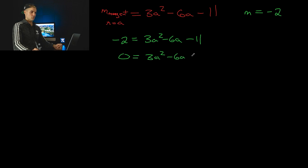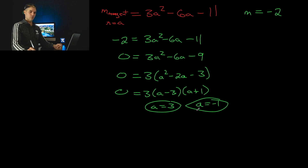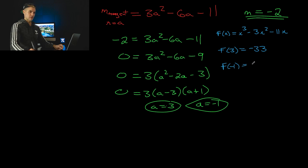We end up with a quadratic equation. Bringing negative two over and factoring, this gives us a minus three times a plus one. So we get an a value of three and an a value of negative one — those are the two x values where the slope of the tangent is negative two. To get the corresponding y values, plug into the original function: f of three gives twenty-seven minus twenty-seven minus thirty-three, which is negative thirty-three. Plugging in negative one gives negative one minus three plus eleven, which is seven. The two coordinates are (3, -33) and (-1, 7).